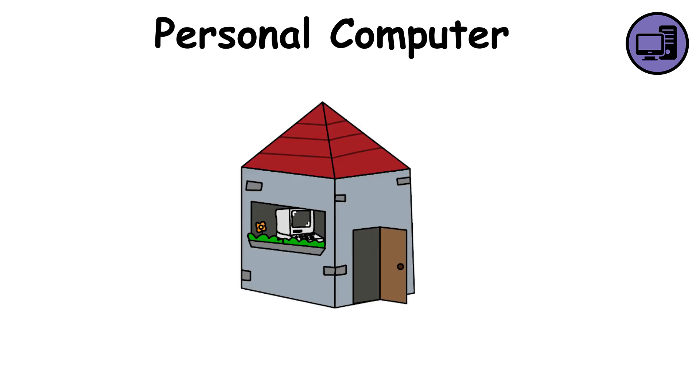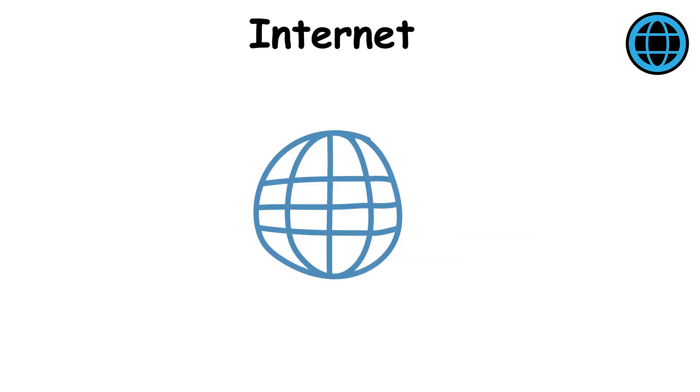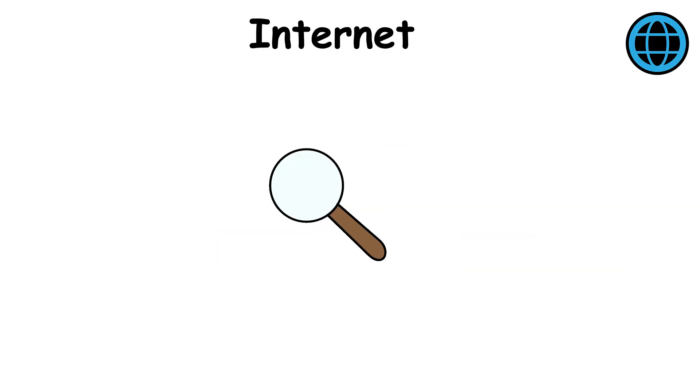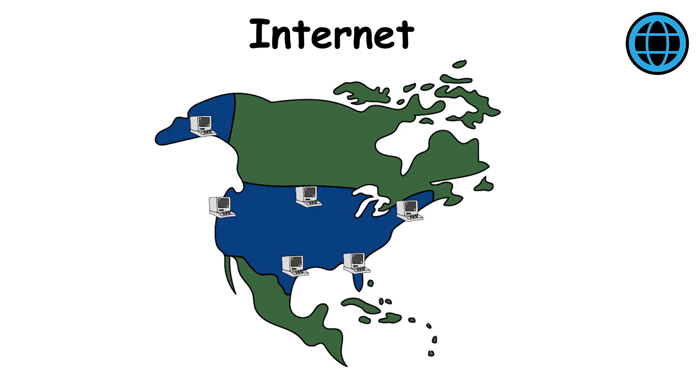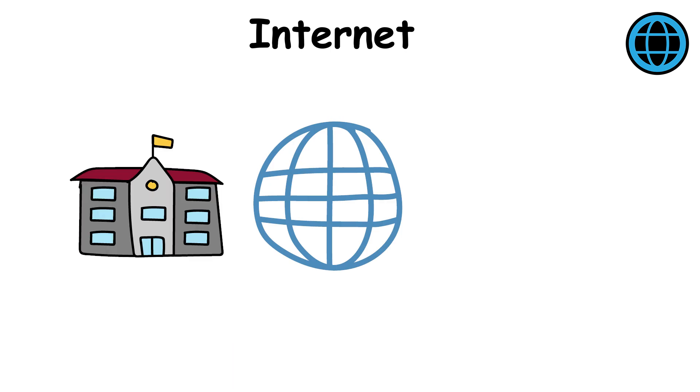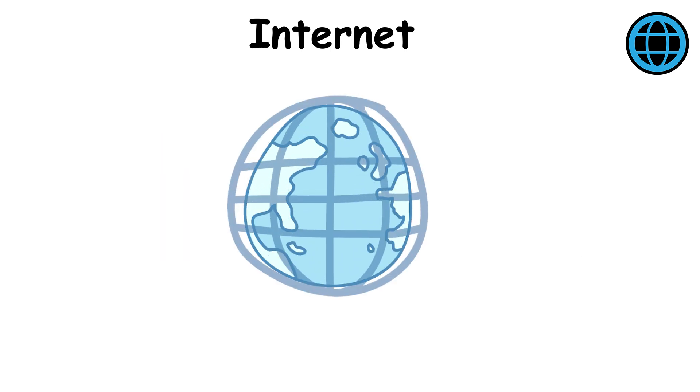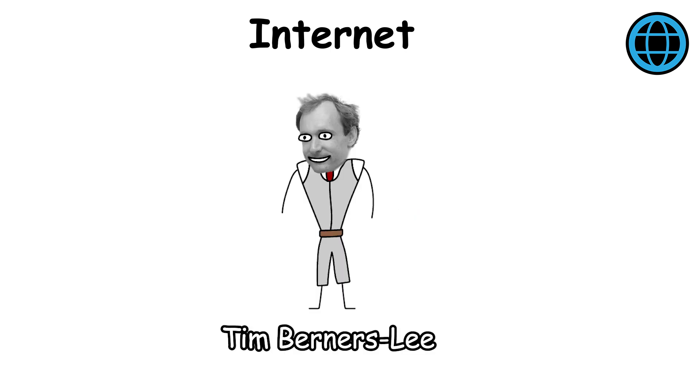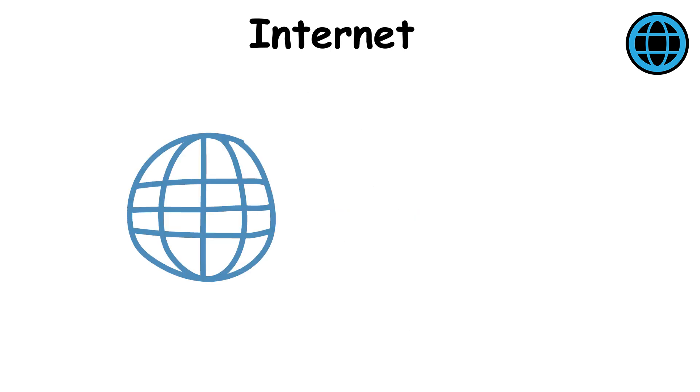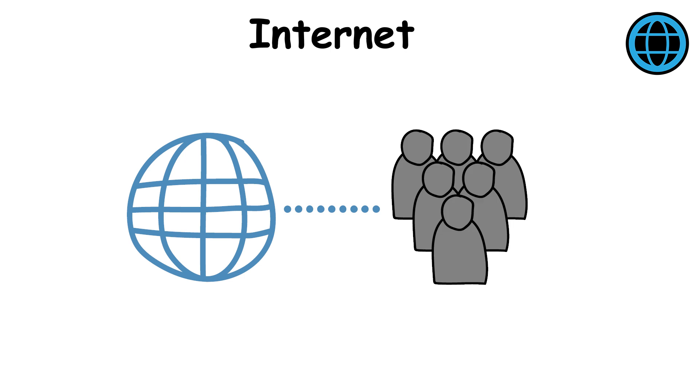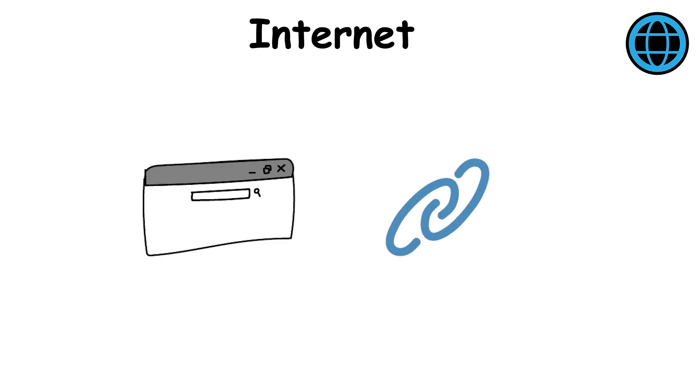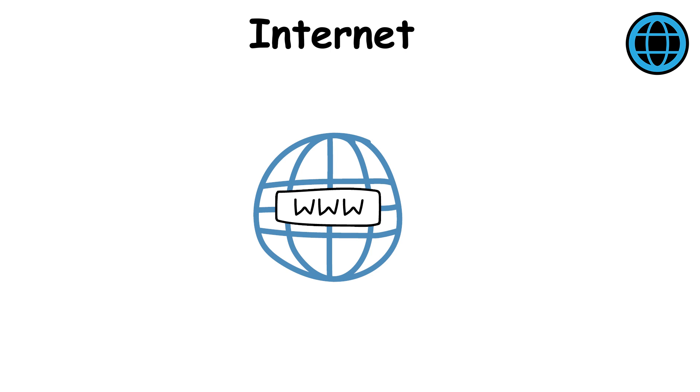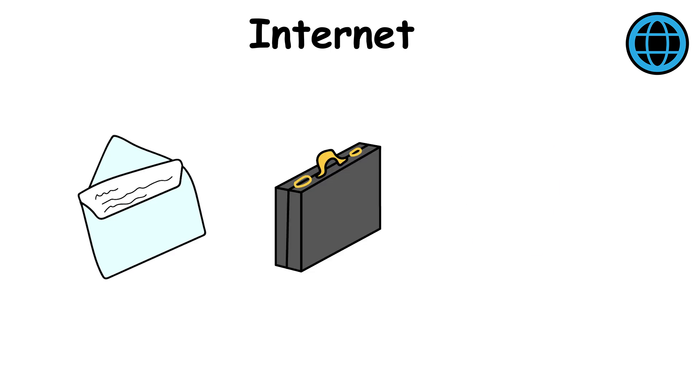Internet. The Internet began as a U.S. government research project called ARPANET in the late 1960s. Designed to let computers share information over long distances, it connected universities and research centers before expanding into a global network. The creation of the World Wide Web by Tim Berners-Lee in 1989 made the Internet accessible to ordinary users through browsers and hyperlinks. By the 1990s, it had become a central part of communication, business, and entertainment.